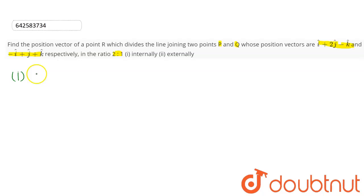So according to the formula, R vector is our position vector that will be equal to M into Q vector plus N into P vector divided by M plus N. So here M:N is the ratio, and Q vector is this vector.